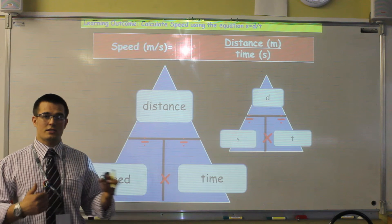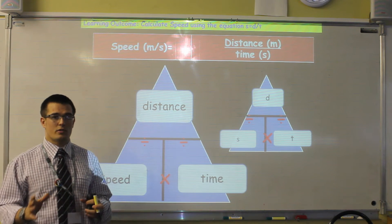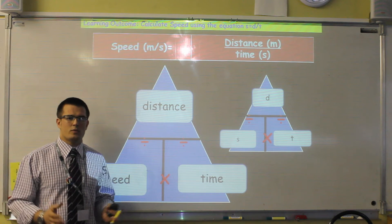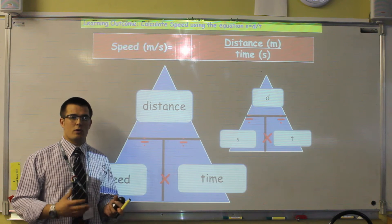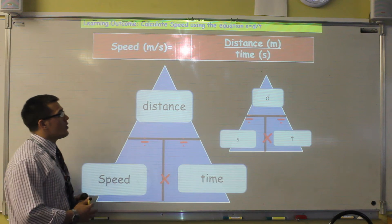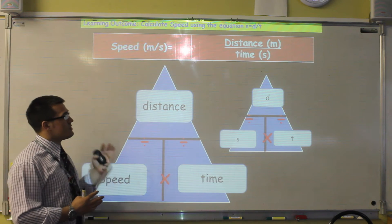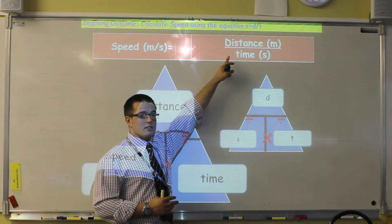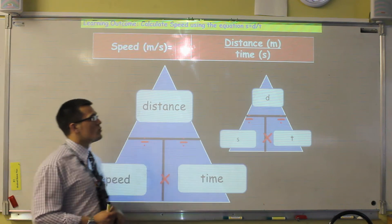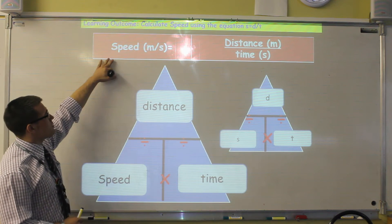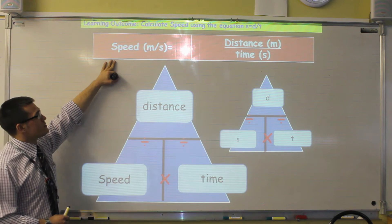It is how much of a distance we cover in a certain period of time. Now when we talk about physics, we don't tend to use miles per hour very regularly. What we tend to use is standard units. So for distance we always use meters, and for time we always use seconds.